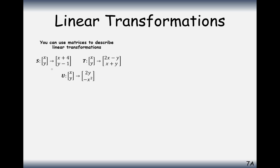Let's have a look at these three transformations. The first transformation, S, adds 4 to the x-coordinate and subtracts 1 from the y-coordinate. We'll see if that's a linear transformation. Transformation T is a combination of x's and y's: we double x and subtract y for the x-coordinate, and add x and y for the y-coordinate. This next transformation sends x, y to double y, and then we take the negative square of the x-coordinate for the y-coordinate.